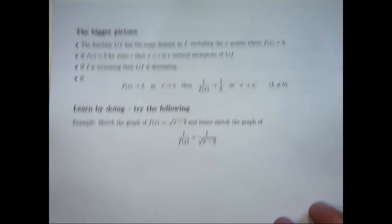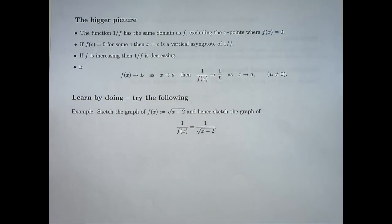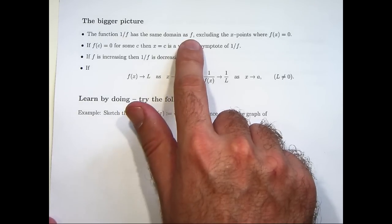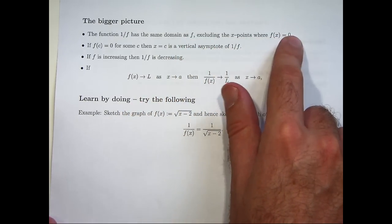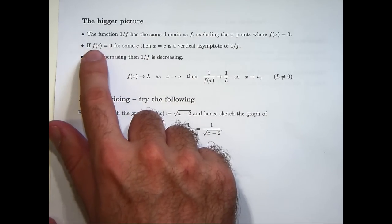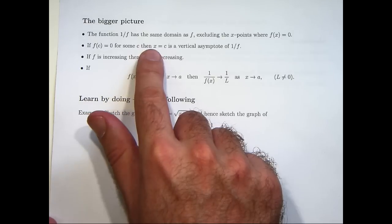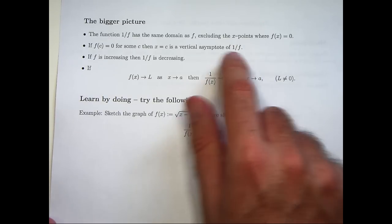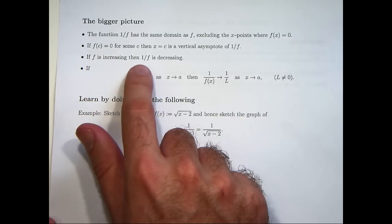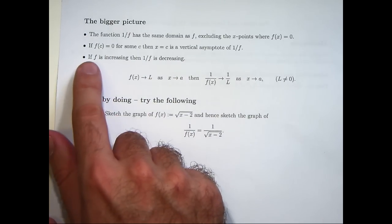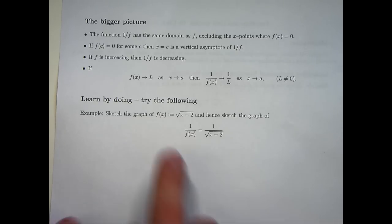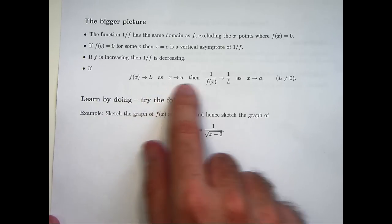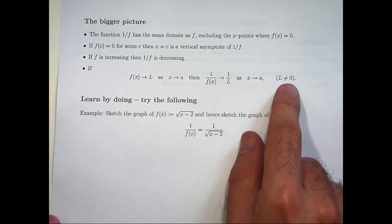Let's look at the bigger picture. What are some important ideas you can apply to lots of different examples? The reciprocal function has the same domain as f, but you exclude any x points where f of x equals 0. At those zeros, if f of c equals 0 for some c, the line x equals c is a vertical asymptote of the reciprocal function. If f is increasing, then the reciprocal function is decreasing, and similarly if f is decreasing, then the reciprocal function is increasing. Finally, if f has a limit as x approaches some number, then the reciprocal function has a reciprocal limit — just be careful not to divide by 0.